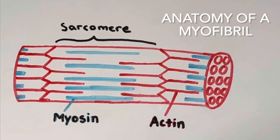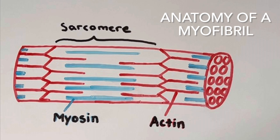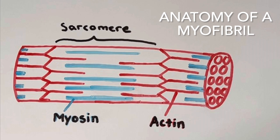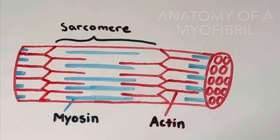Let's take a look at the anatomy of a myofibril. Every myofibril contains a sarcomere, which is the contracting unit. The sarcomere contains smaller filaments. The thicker one is called myosin, and the thinner one is called actin.